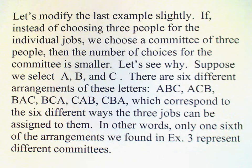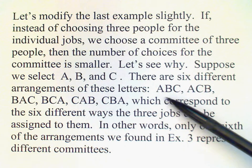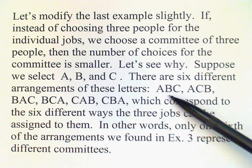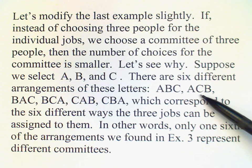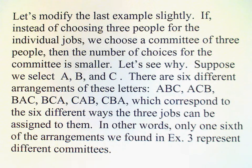You could have A being the director, B being the music person, and C being the business manager, or A being the director, C being the music director, and B being the business manager, and so on. There are six different ways that they can split up this work. And so that means basically that there are only one-sixth as many committees as we had choices in the previous example.